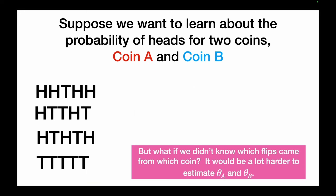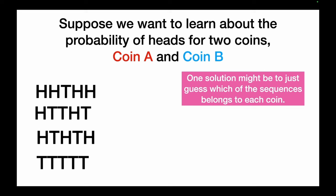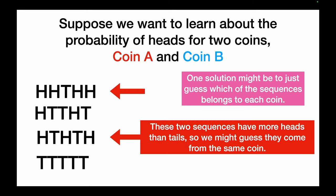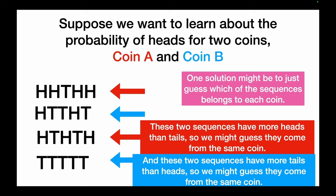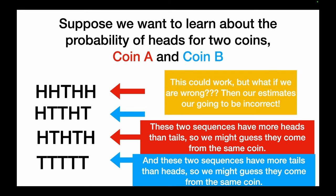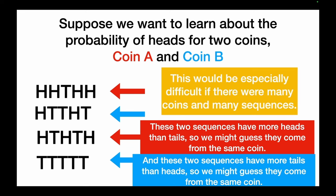But what if we didn't know which flips came from which coin? Now we don't have the labels of which sequences came from which coin, and it would be a lot harder to estimate theta_A and theta_B. This would be especially difficult if there were many coins and many sequences with overlap, making it hard to identify for sure which sequence came from each coin.